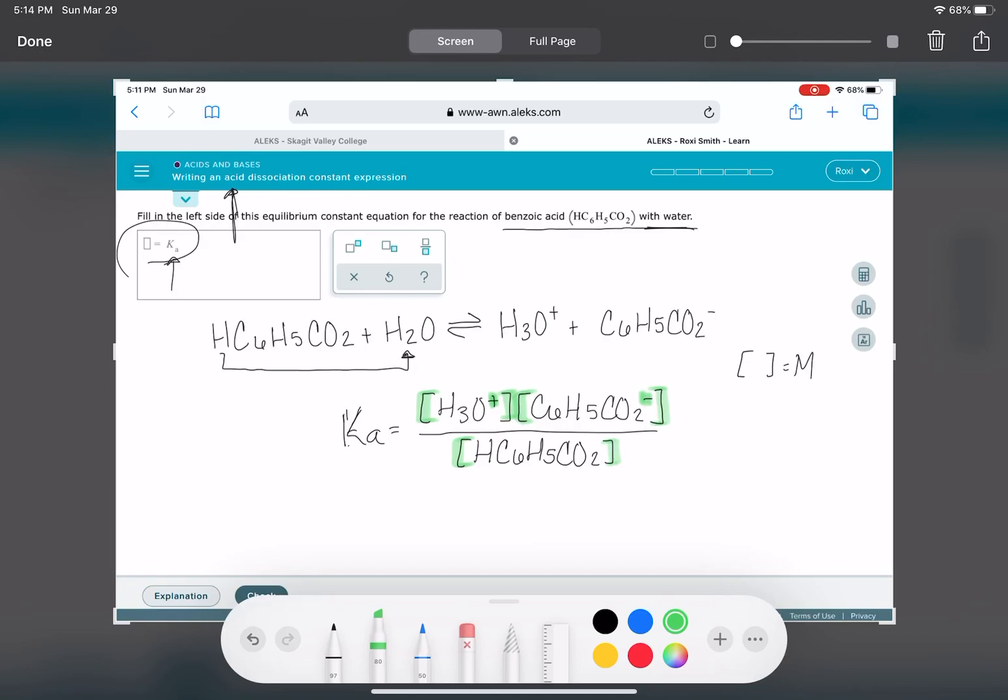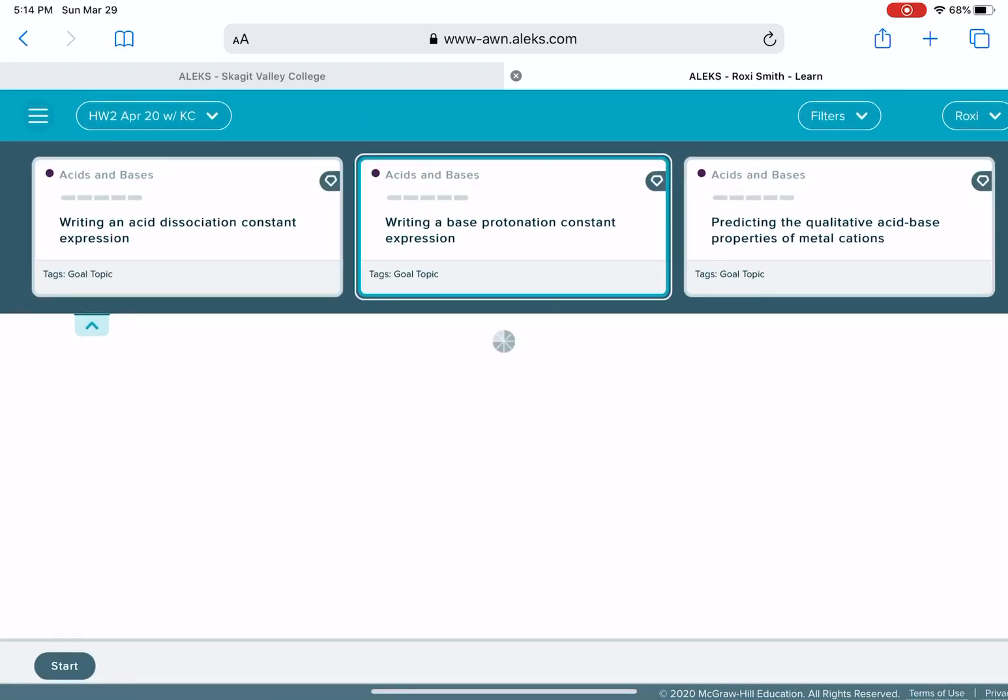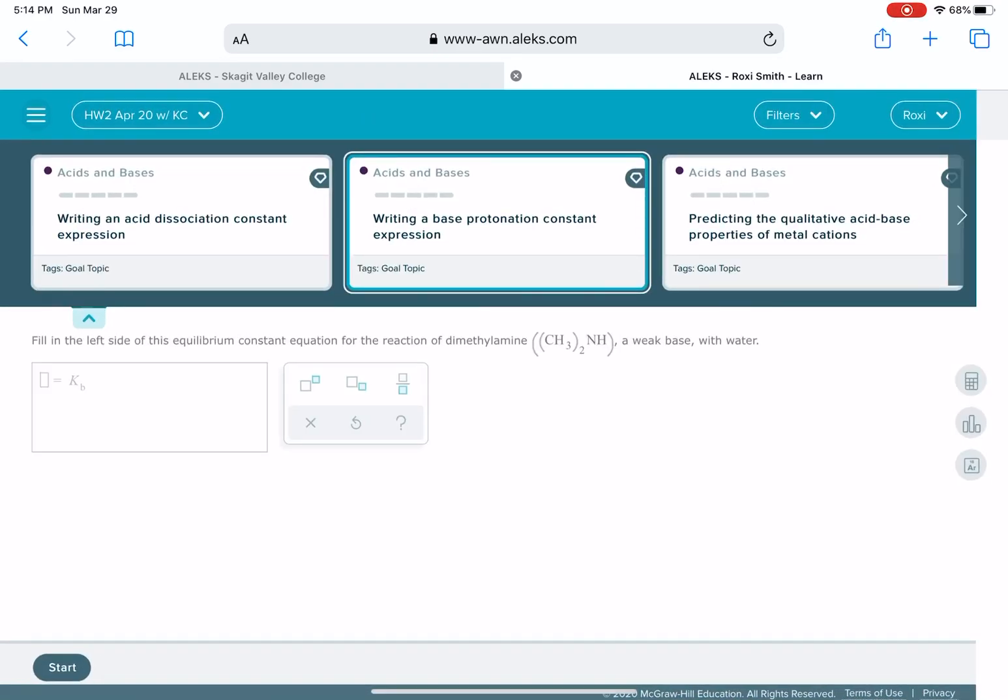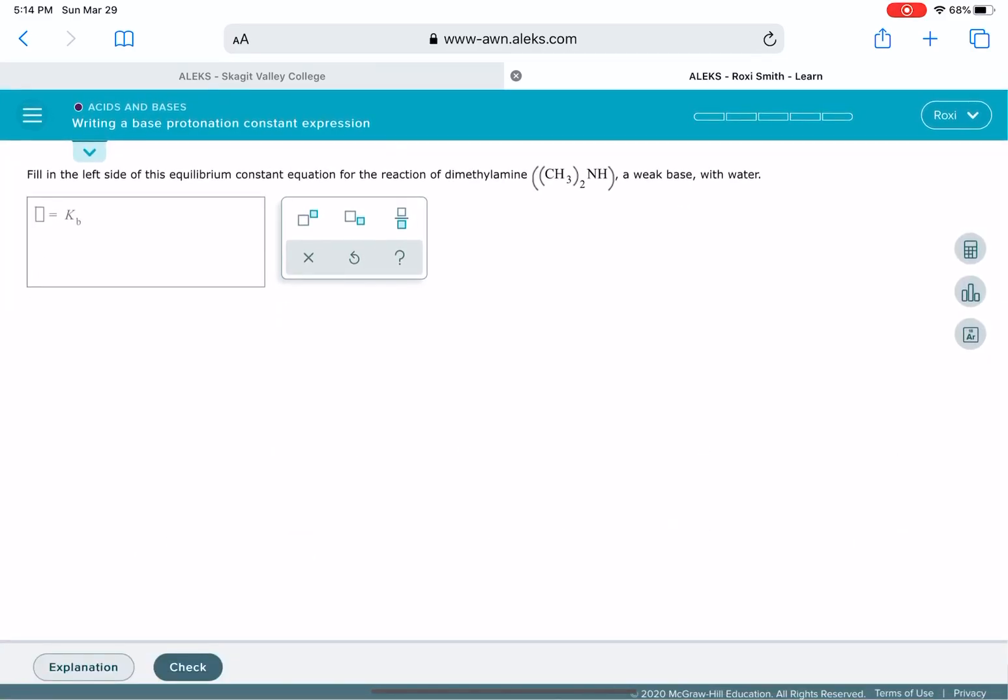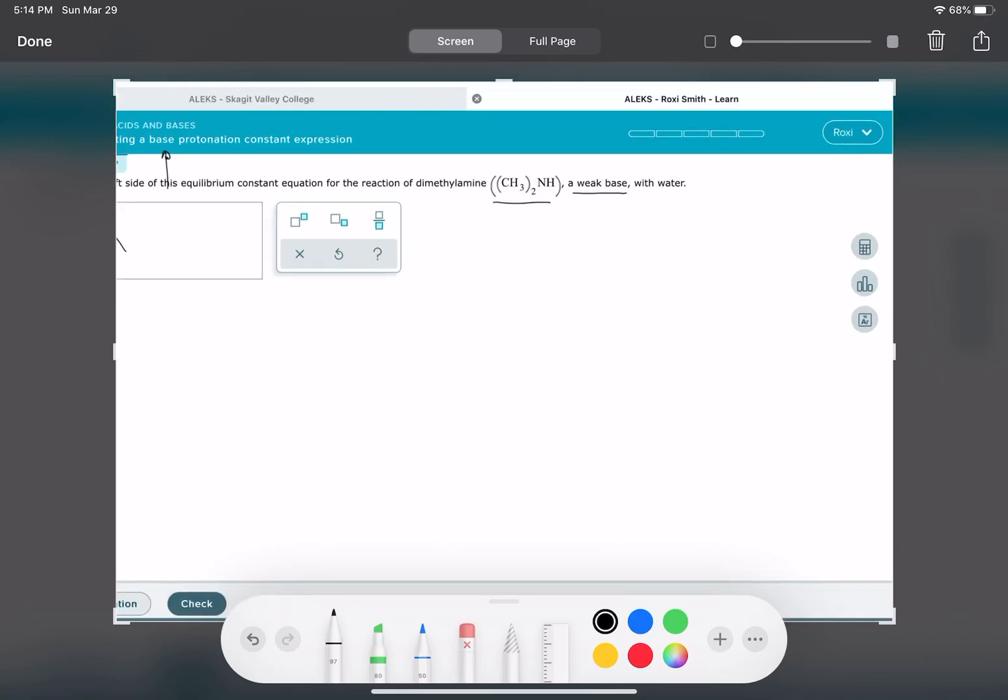Now, you have a similar problem in ALEKS, writing a base protonation constant expression. This is almost the exact same thing. But this time, it's with a base instead of with an acid. So here, we know it's a base because it tells us we have a weak base. It gives us, it says KB, and then also it's using the word base up here, and it wants the equilibrium expression for this again. So we're going to start with the molecule that they provided.